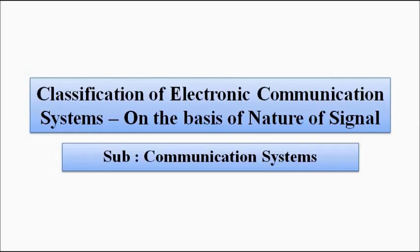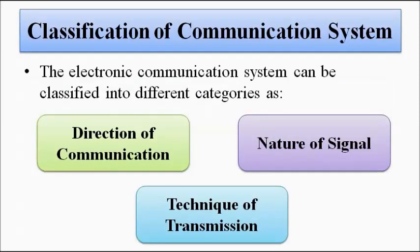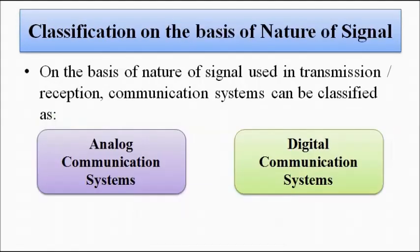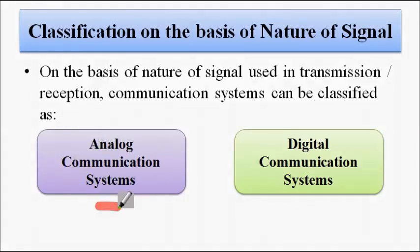There are three ways to classify communication systems: direction of communication, nature of signal, and technique of transmission. On the basis of nature of the signal used in transmission and reception, communication systems can be classified as analog communication systems and digital communication systems.